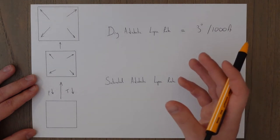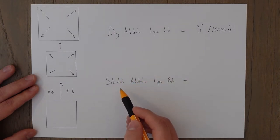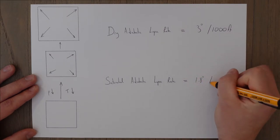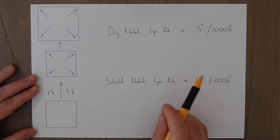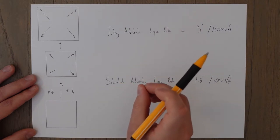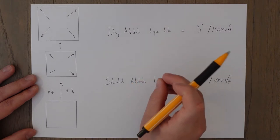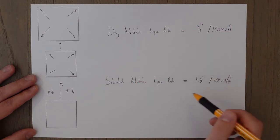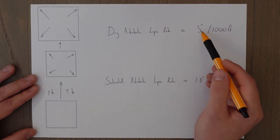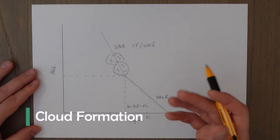When the air cools down to the dew point and becomes saturated, it then cools adiabatically at a different rate known as the saturated adiabatic lapse rate, which is 1.8 degrees per thousand feet. The reason for this difference is that as water vapor condenses into liquid form at the dew point, heat is released in order to change it to liquid state. This latent heat adjusts the cooling rate from 3 degrees down to 1.8 degrees per thousand feet.